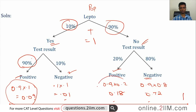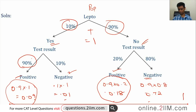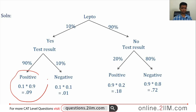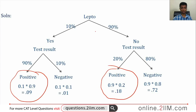The probability the result will be positive is 0.09 + 0.18 = 0.27, but that is not what the question asks. The question asks: given that the result is positive, what is the chance the person actually has lepto? The result being positive can happen through two routes — the person has lepto and tests positive, or the person does not have lepto and tests positive.